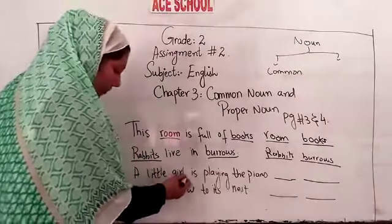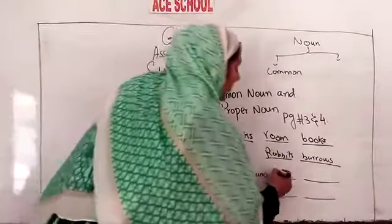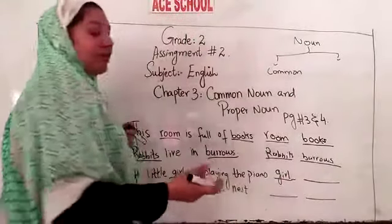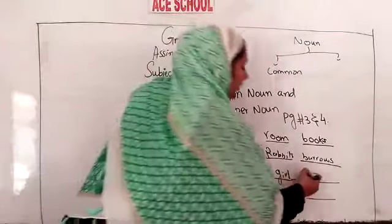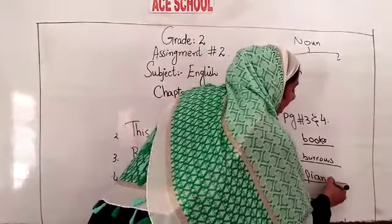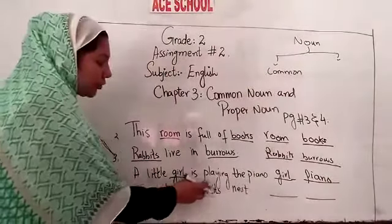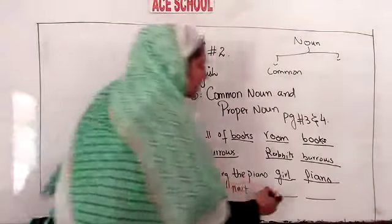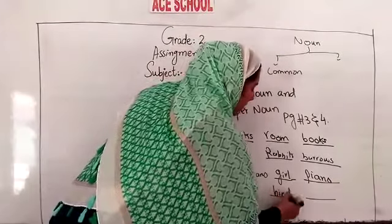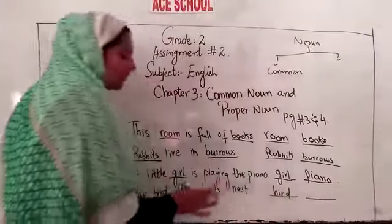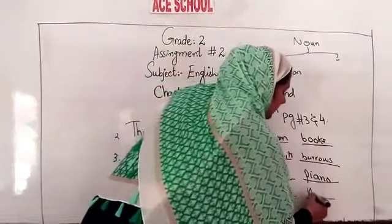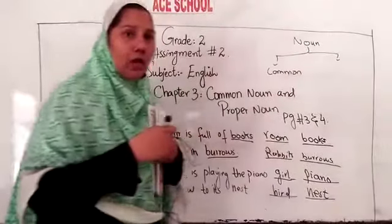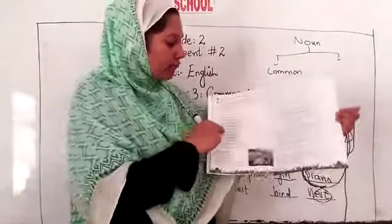A little girl is playing with the piano — 'girl' is a common noun because it's a name of a person; 'piano' is a name of a thing, yes it is a common noun. A bird flew to its nest — 'bird' is a common noun, it's not talking about any specific bird; 'nest' is a name of a place, it's a common noun.